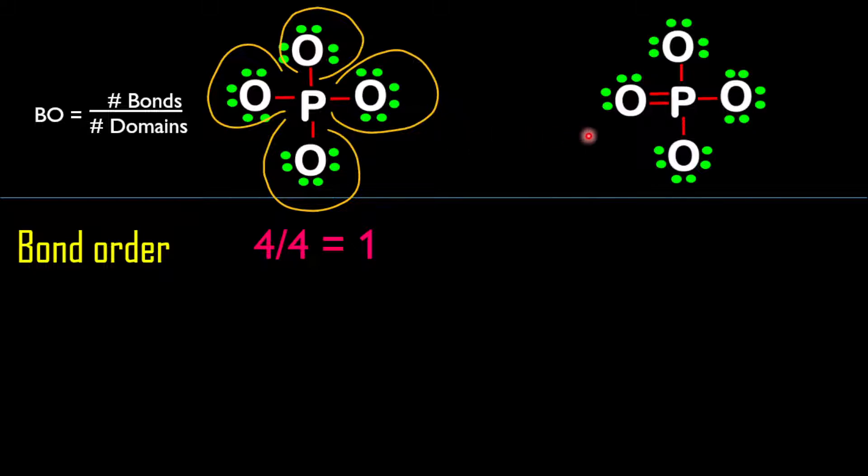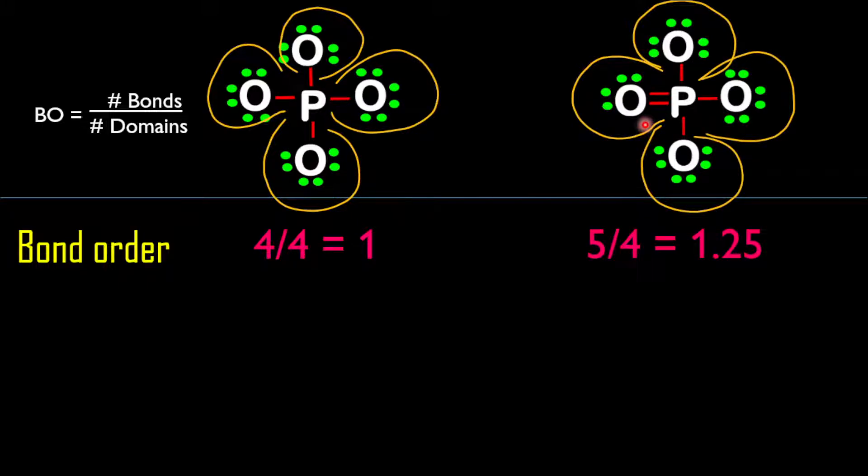For the second structure, there is a double bond and three single bonds. Therefore, there is a total of five bonds. The number of domains will be one, two, three, four. Therefore, the bond order for this second structure is five divided by four, which equals 1.25.